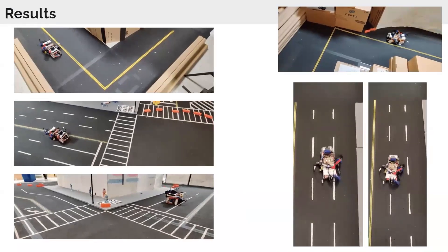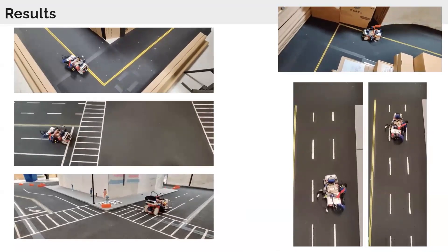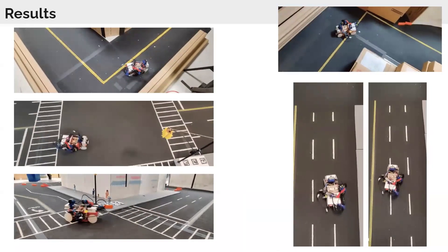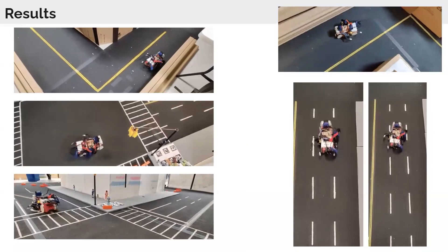So for the final results, we found that our neural network is able to avoid obstacles. It's able to lane correct and also make turns.